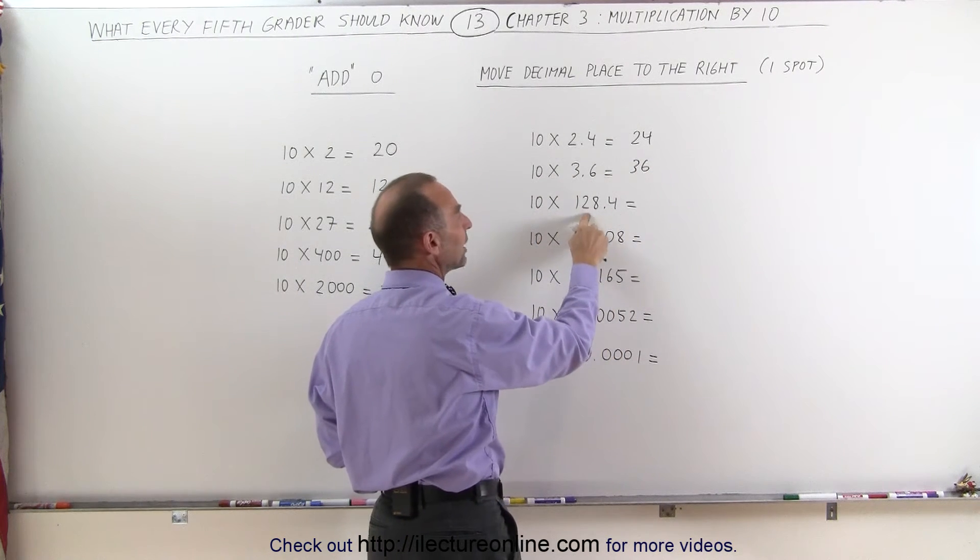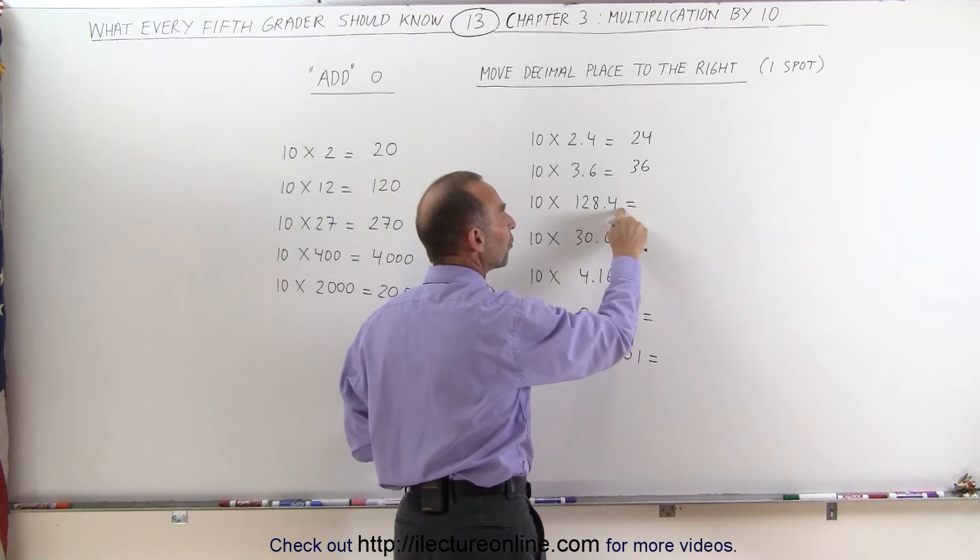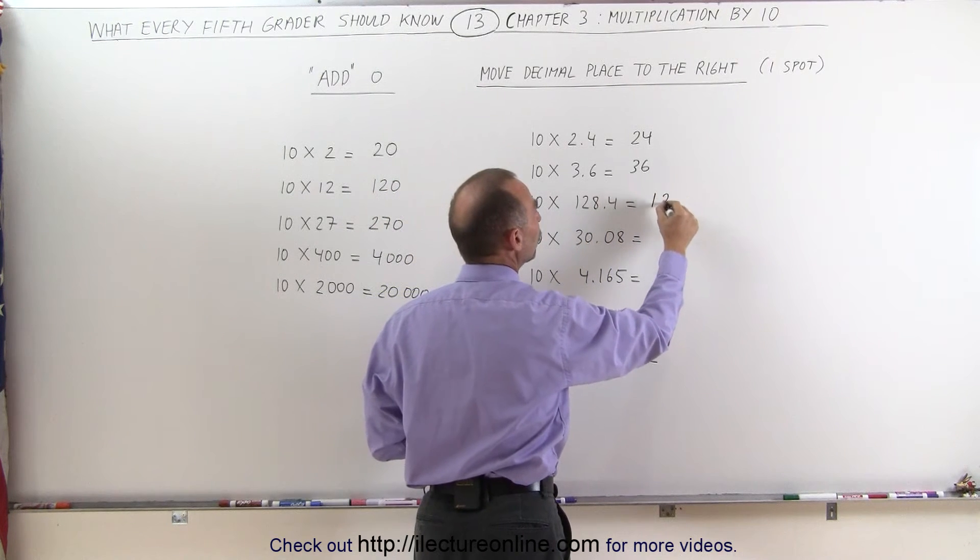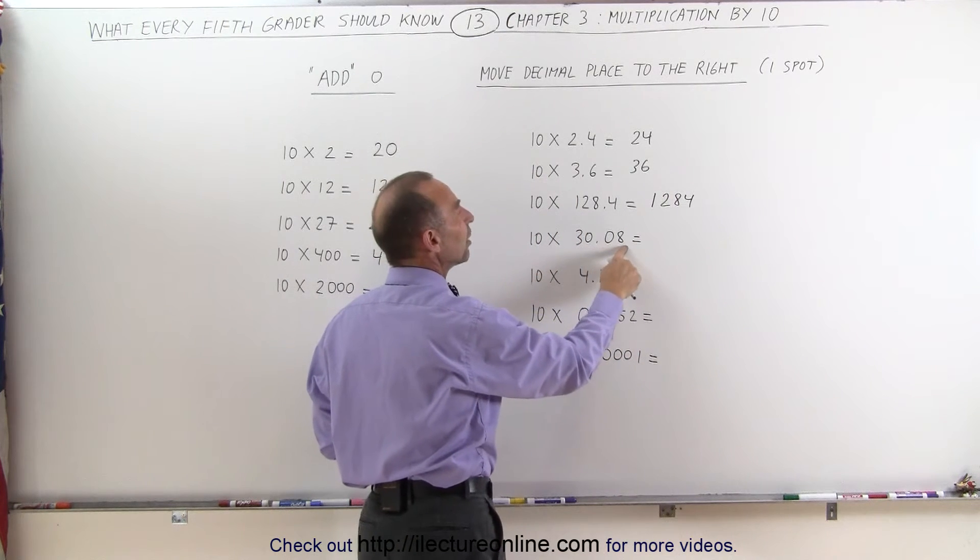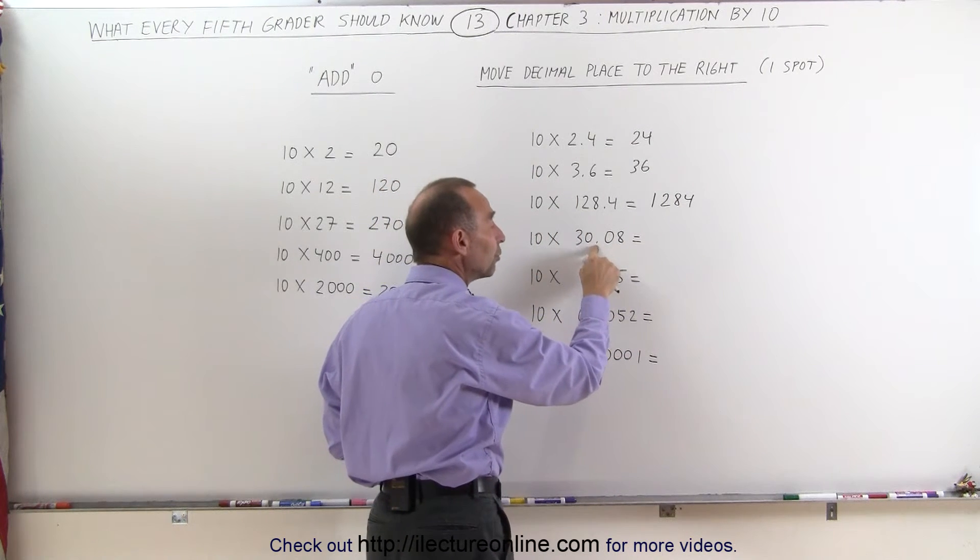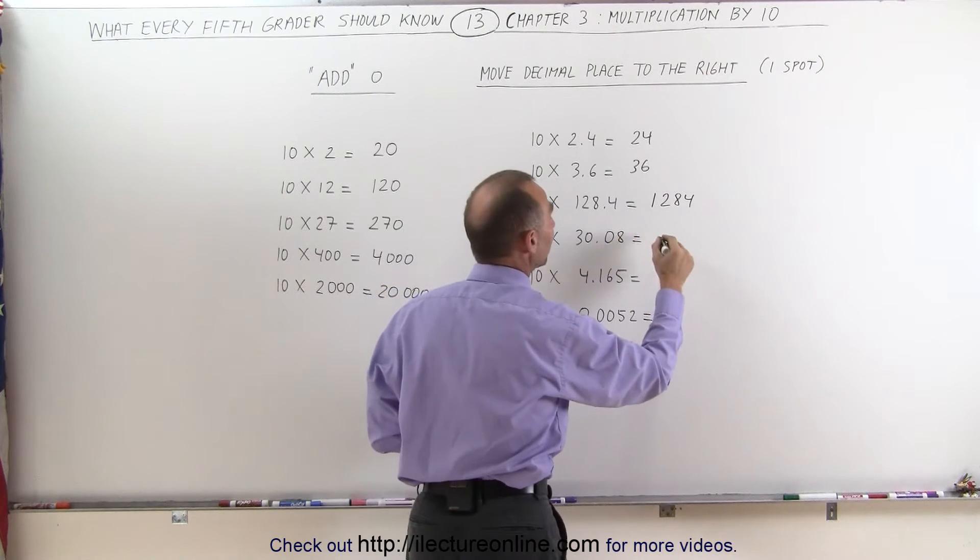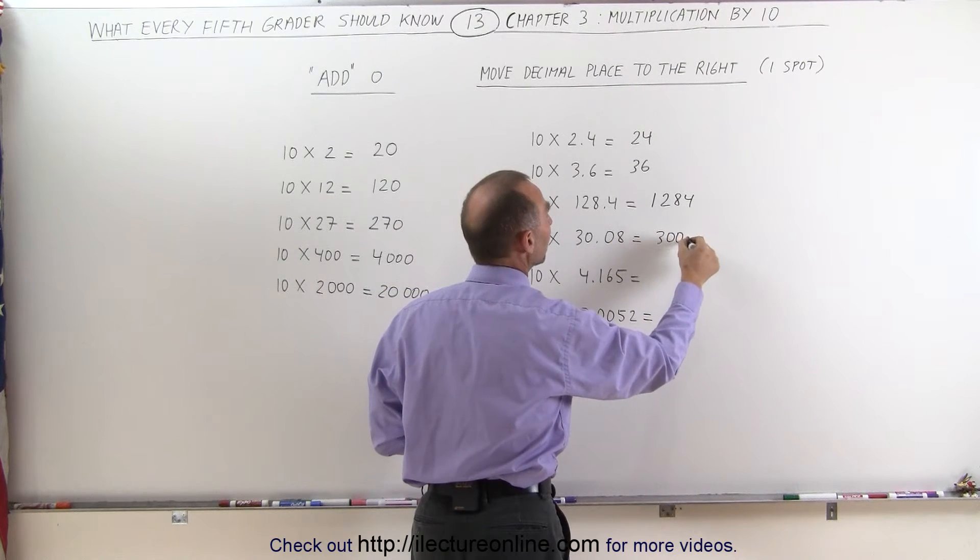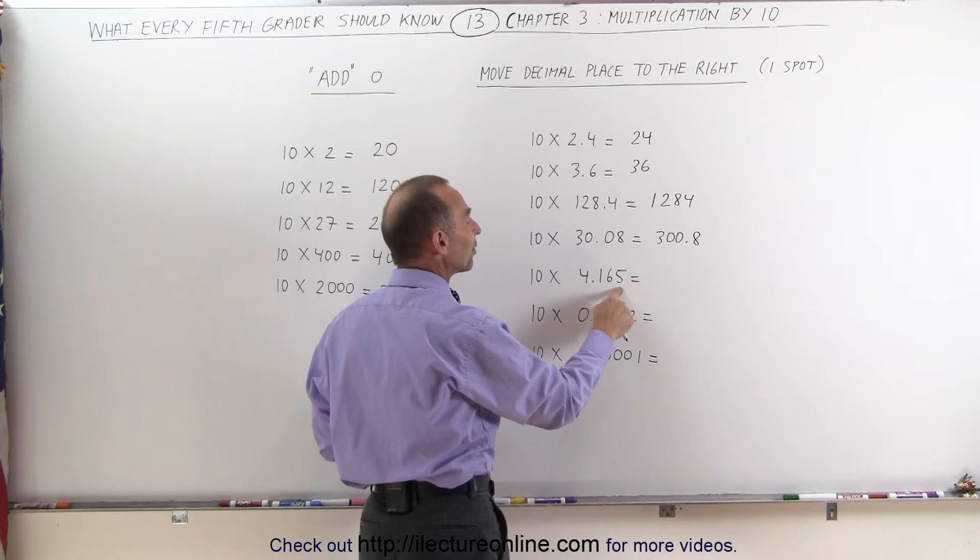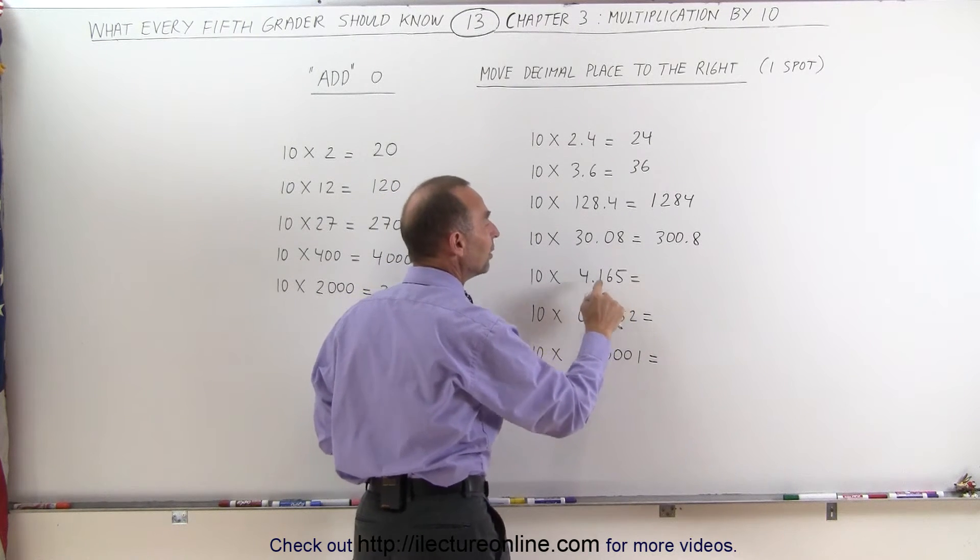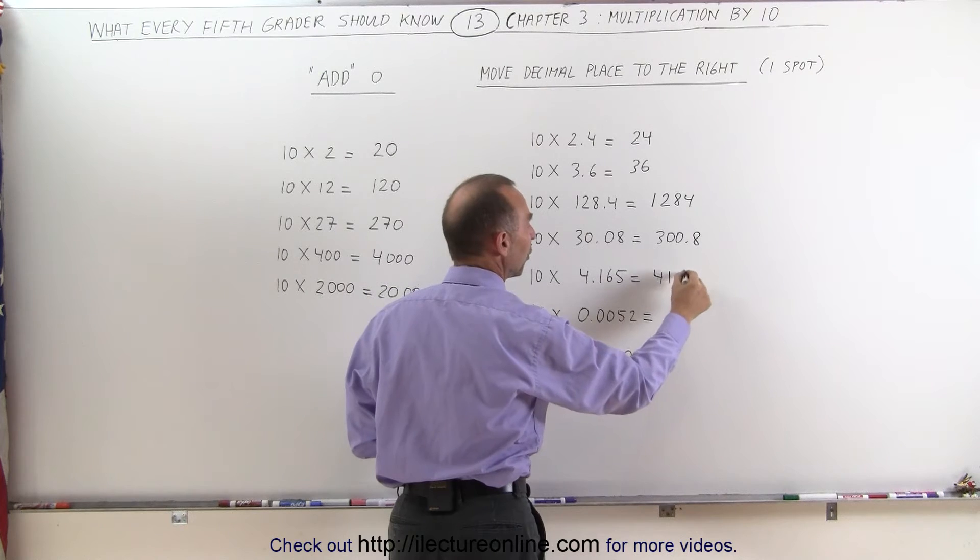10 times 128.4, move the decimal place over one, and you get 1,284. If you have something like this where there's two decimal places, you still move the decimal place over one spot, and this will then become 300.8, or 30.08. 10 times 4.165, move the decimal place over one, you get 41.65.